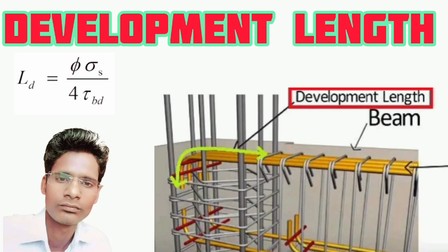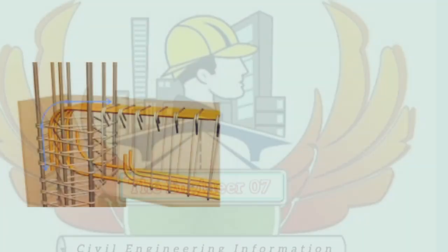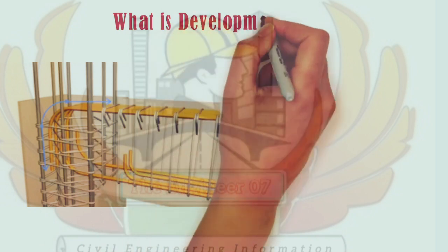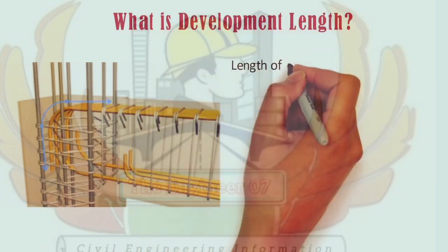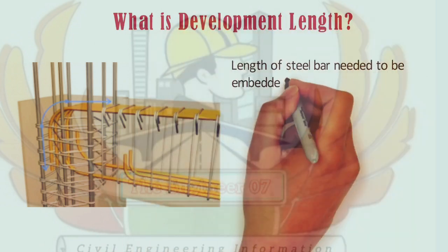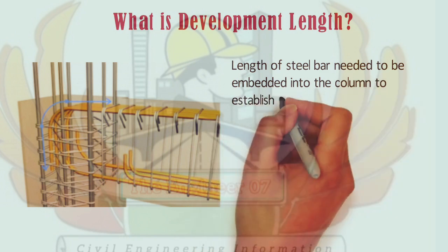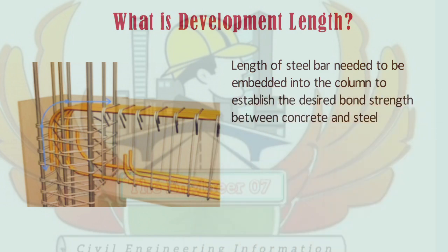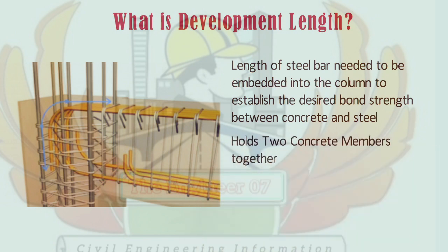Hello friends, in this video we will discuss about development length. So what is development length? It is a length of steel bar needed to be embedded into the column to establish the desired bond strength between concrete and steel. In simple language, it is a length of steel bar which holds two concrete members together.